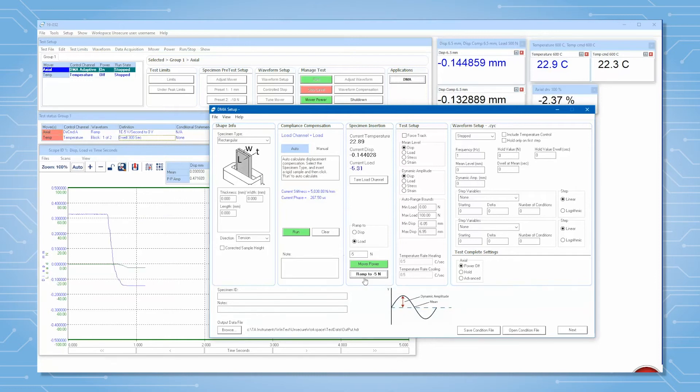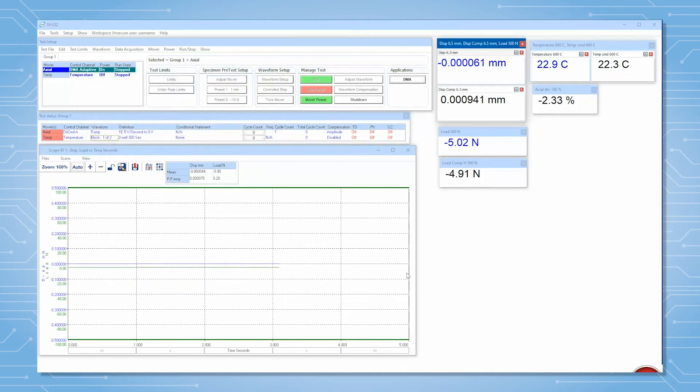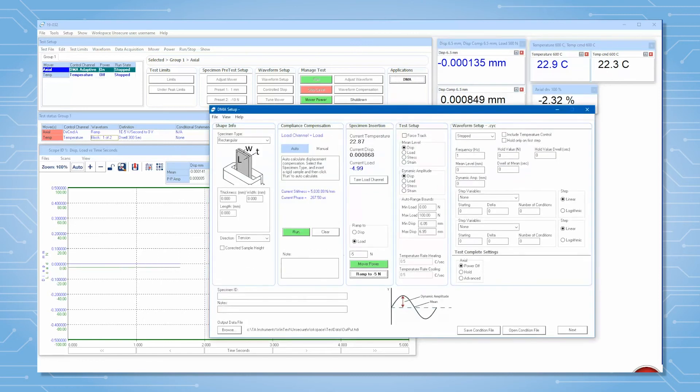Right click on the displacement meter in WinTest. Click on Properties and press Auto to set a new tare for your displacement. Your displacement meter shows zero millimeters now.